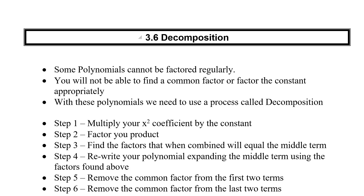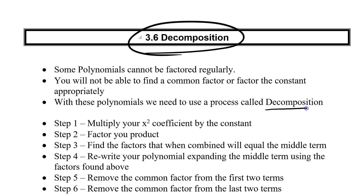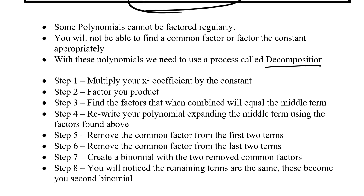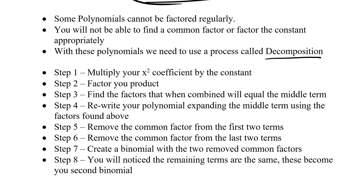We've been looking at factoring trinomials the regular way and some with common factors. But some trinomials can't use either of those methods — they don't factor regularly, and there's no common factor to pull out. So we need a third method: decomposition. Decomposition will work on any single trinomial you want, even when regular factoring works, but it has a bunch of steps, so we leave it as our last resort.